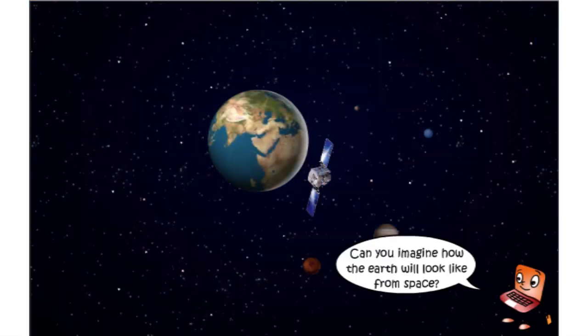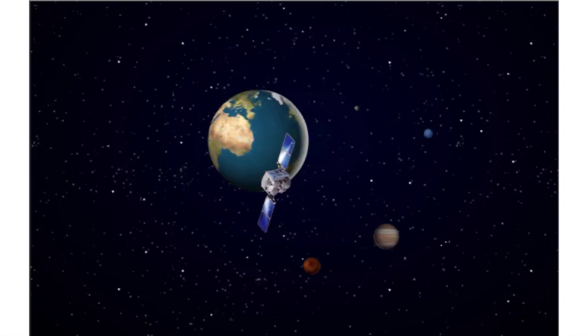Can you imagine how the earth will look like from space? When we look at the earth from space, we only see the land and blue water on the earth. We do not see the man-made demarcation of continents and countries.